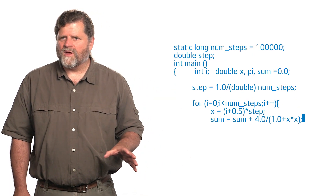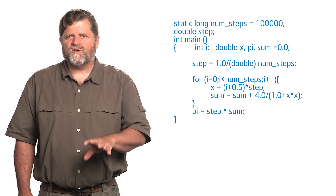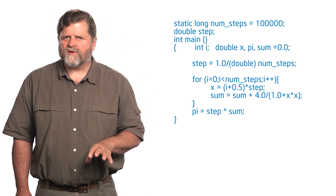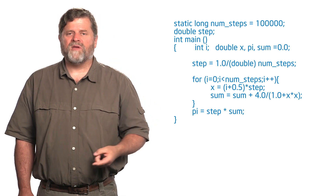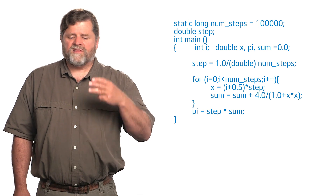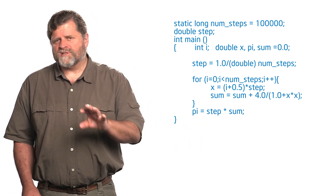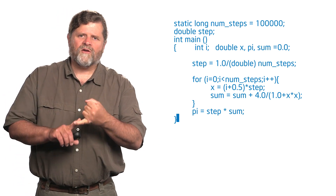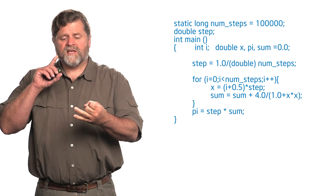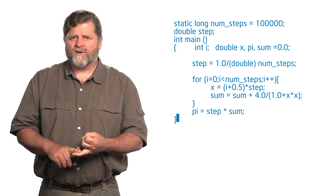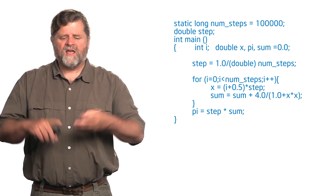What this looks like in code is very simple — you can download it from the exercises or just type it in yourself. You set the number of steps, which needs to be a large number, set up the step size, and then loop from zero to less than the number of steps. Inside the loop, compute the value of x at the middle of each rectangle, take the height of that rectangle, sum them all together, and multiply by the constant step size when done. That gives an approximation to pi. We like this program because it's simple, you can check the answer, and it runs faster and faster as you add threads.